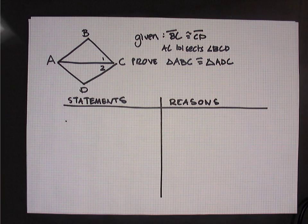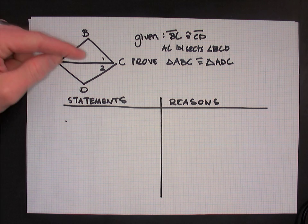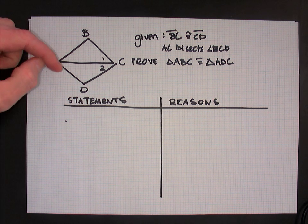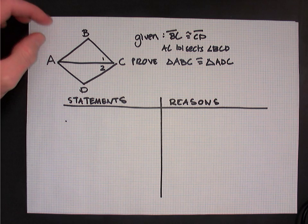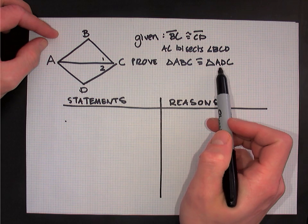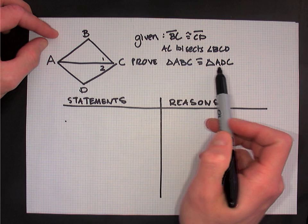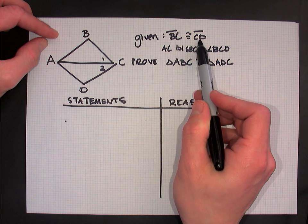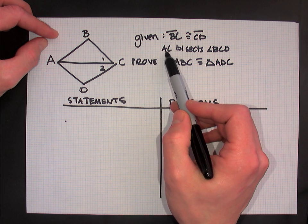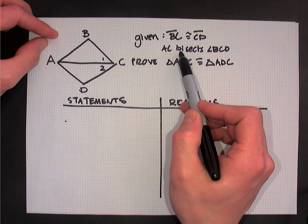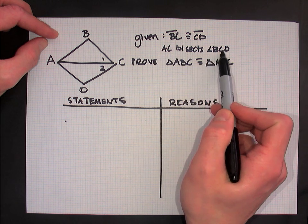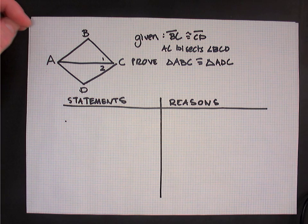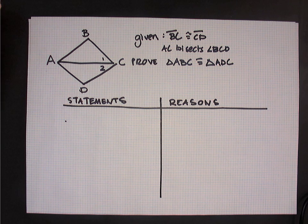Let's get back to our example. We've got two triangles: triangle ABC on the top and triangle ADC on the bottom, and I want to prove that these two triangles are congruent. I'm given that segment BC is congruent to segment CD, and I'm also told that segment AC bisects angle BCD. Before we start the actual proof, let's think about the plan we're going to follow.